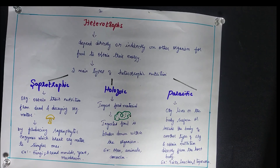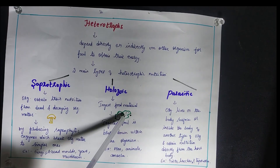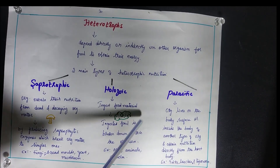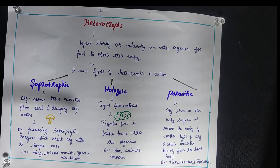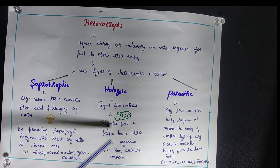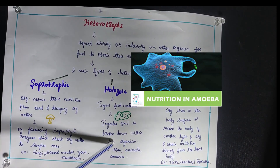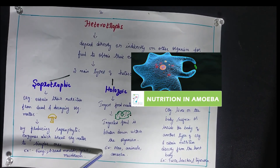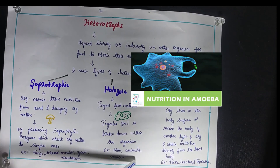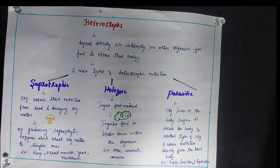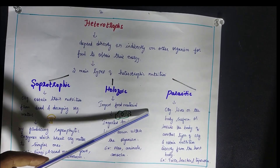You would have also seen bread mold forming after two or three days when kept in an unprotected condition — fungal growth appears on top. These organisms are called saprophytes. The next category is holozoic organisms; they ingest food material and after ingesting, break it down into tiny particles inside the organism. Examples of holozoic organisms are humans, animals, and amoeba.